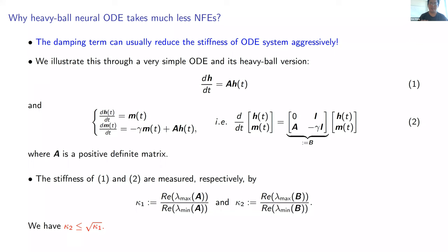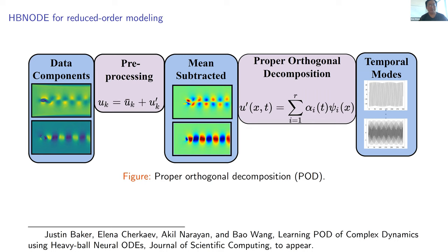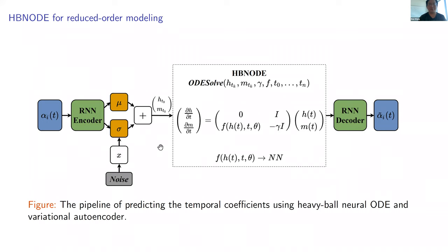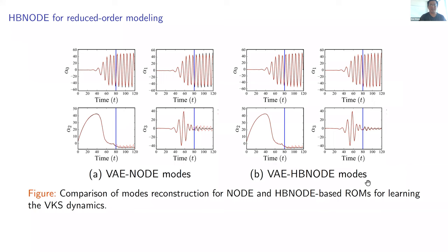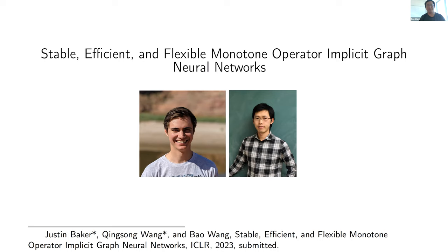We have also applied this to scientific computing problems, for instance reduced-order modeling of observed flow models. We use proper orthogonal decomposition and then model the temporal coefficients using the heavy ball neural ODE. This paper was accepted to the Journal of Scientific Computing special issue. The framework uses an encoder to encode into latent state (H_T, M_T), the heavy ball ODE to evolve the latent state, and a decoder to predict the temporal coefficients. Contrasting with standard neural ODE, our model is much more efficient both in training and testing.